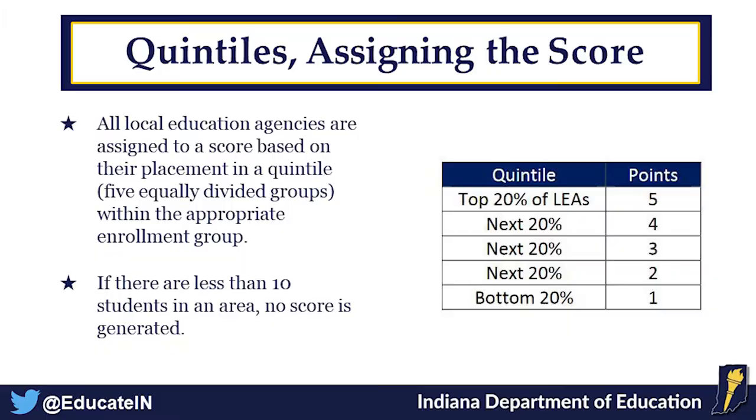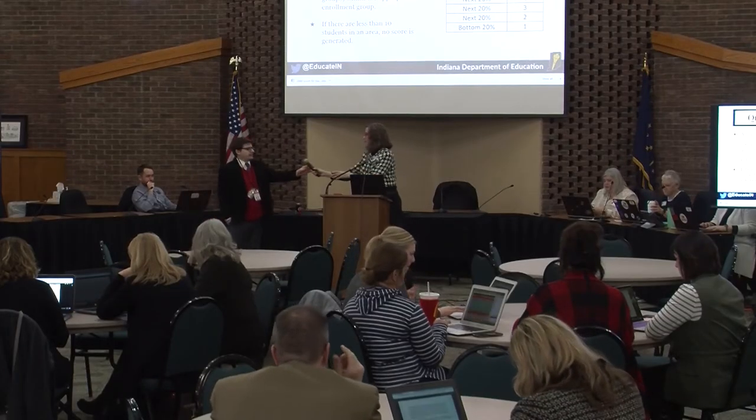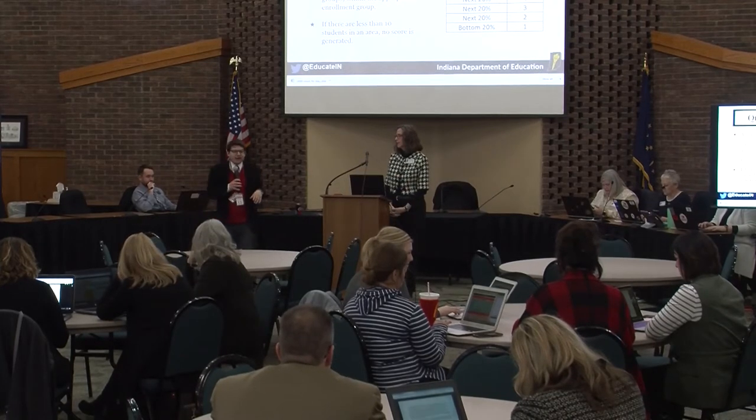Once placed in an enrollment group, districts are separated into quintiles — five groups of 20% each. The top 20% within your size grouping earns five points, next earns four, then three, two, and one. So you earn points depending on which quintile you land in within your enrollment group. If there are fewer than ten students in an area, no score is assigned. If you're in the 85th percentile you get five points; in the 17th percentile you get one point.